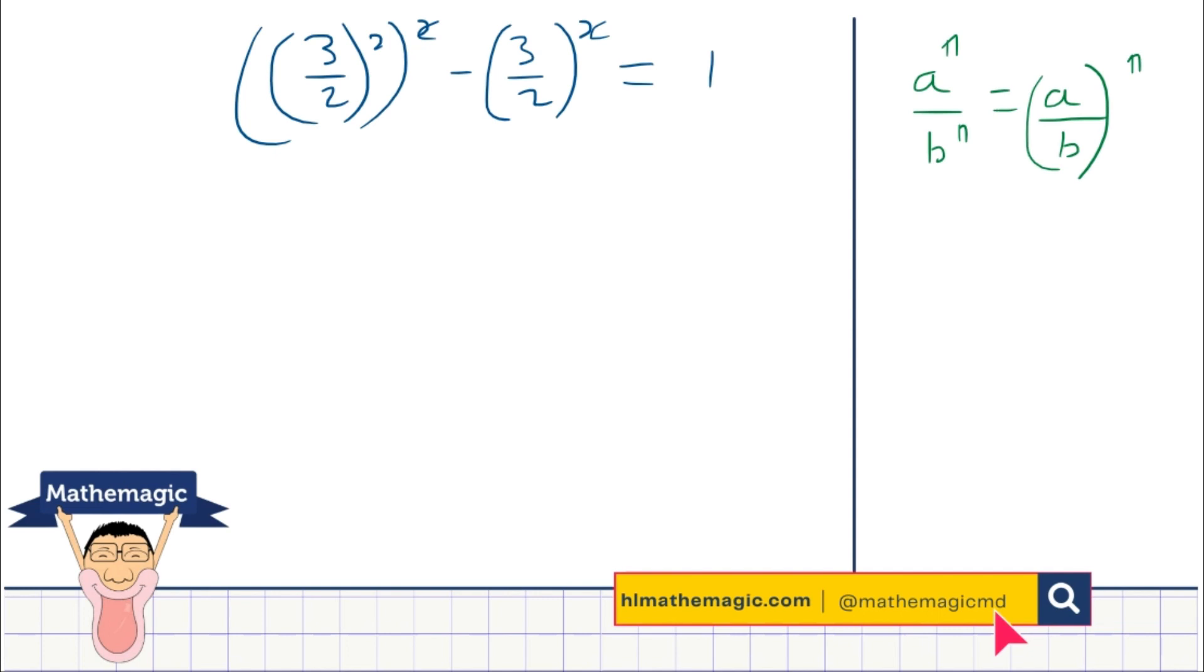So we can use a smart step here and say that we let u equal 3 over 2 to the power x. This will allow us to make a substitution in our equation because we can rearrange our line to say 3 over 2 to the power x squared minus 3 over 2 to the power x is equal to 1. And using the substitution, we end up with u squared minus u minus 1 equals 0.